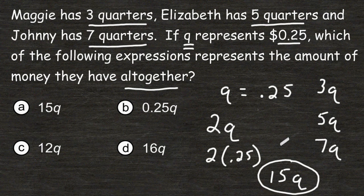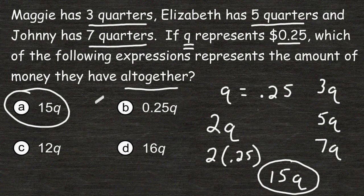Notice that the problem is asking us for an expression that represents the amount that they have all together. They didn't actually ask you to solve to figure out how much they have all together, although you could multiply 15 by 25 cents. So the choice that should be picked in this situation is choice A. Thank you.